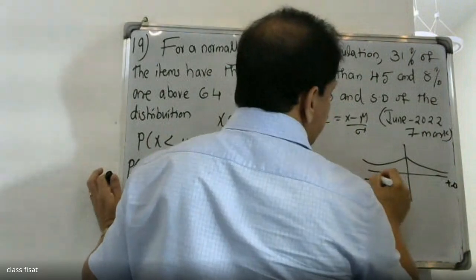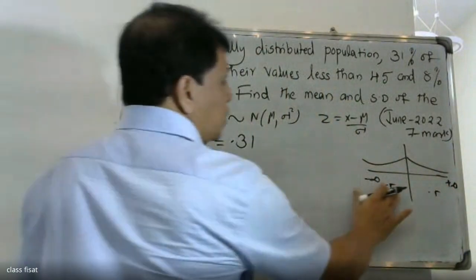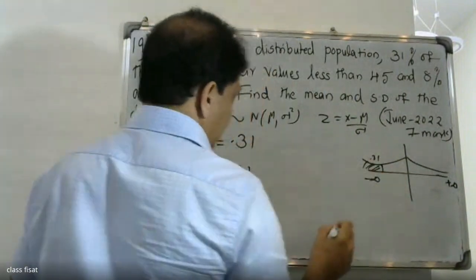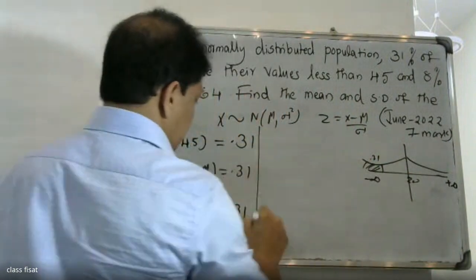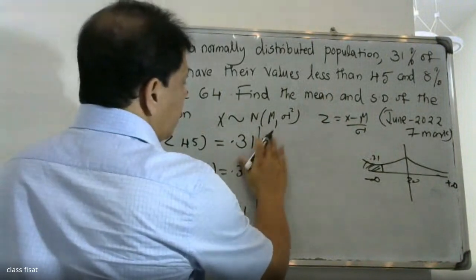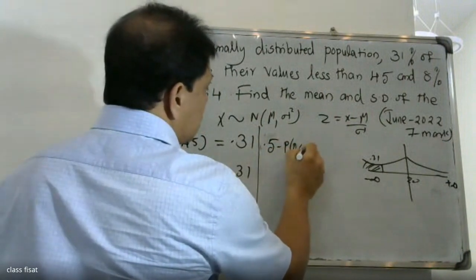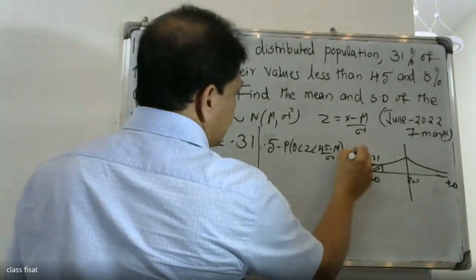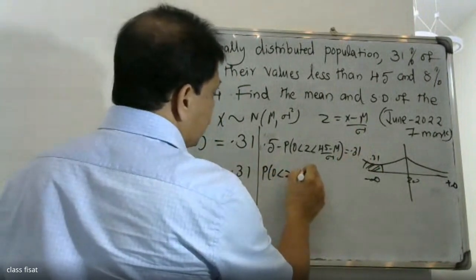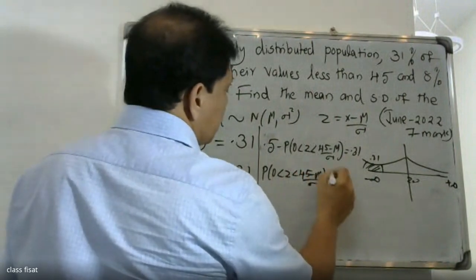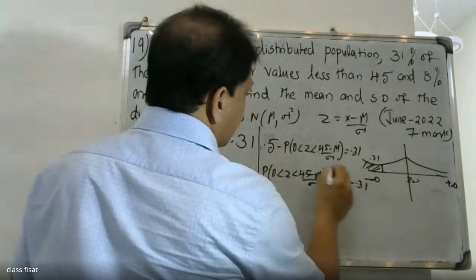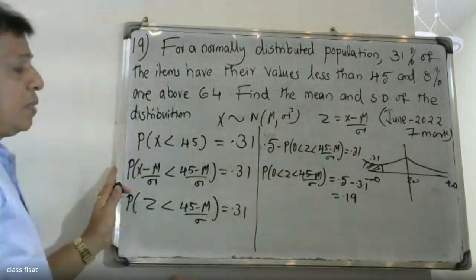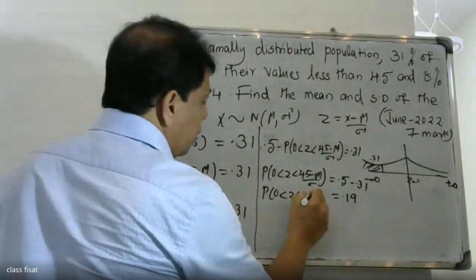Since the total probability is 1 and is split symmetrically at 0.5, we have 0.31 being less than 0.5. So the probability of 0 less than z less than (45 - μ)/σ equals 0.5 minus 0.31, which gives 0.19. Therefore, P(0 < z < (45 - μ)/σ) = 0.19.